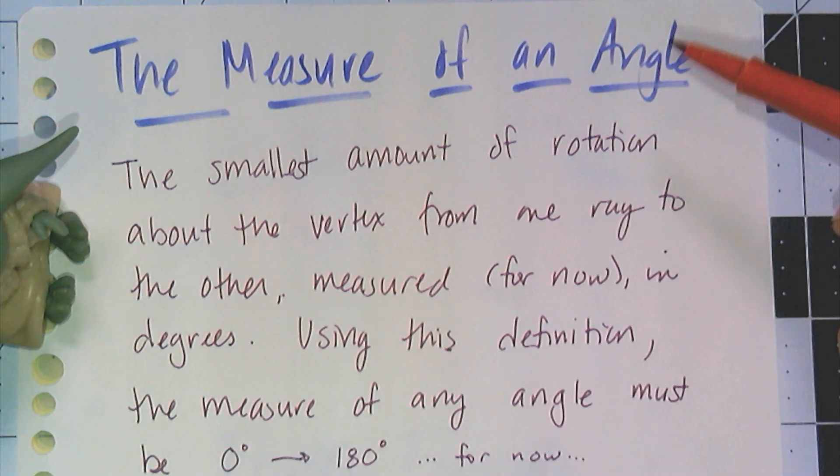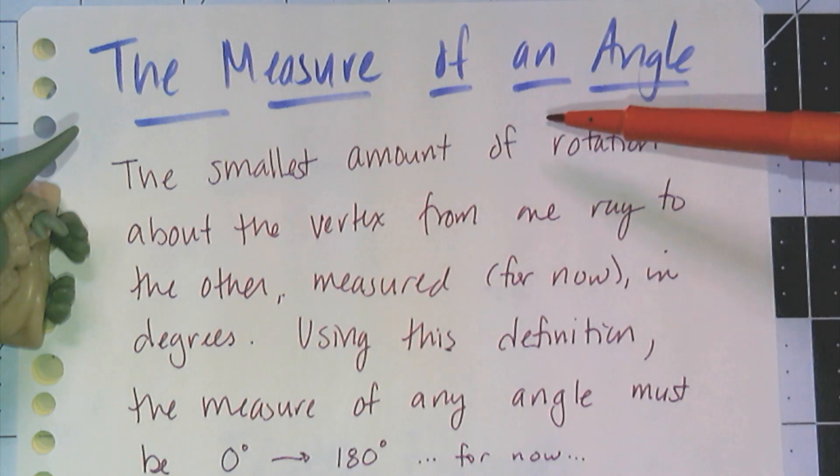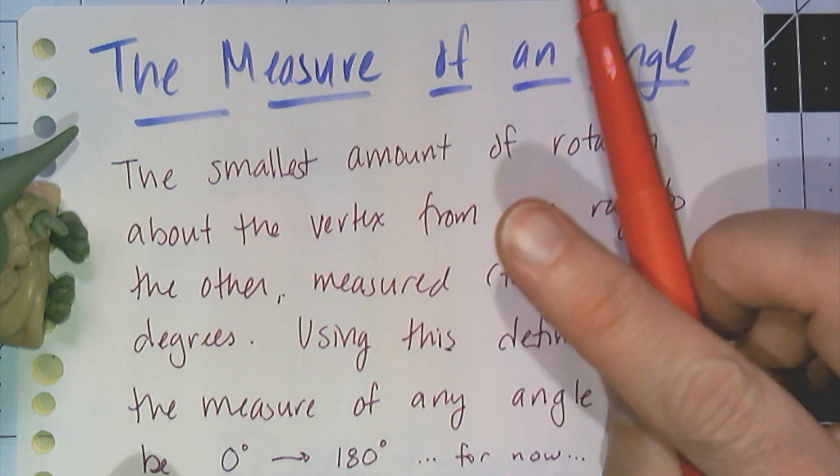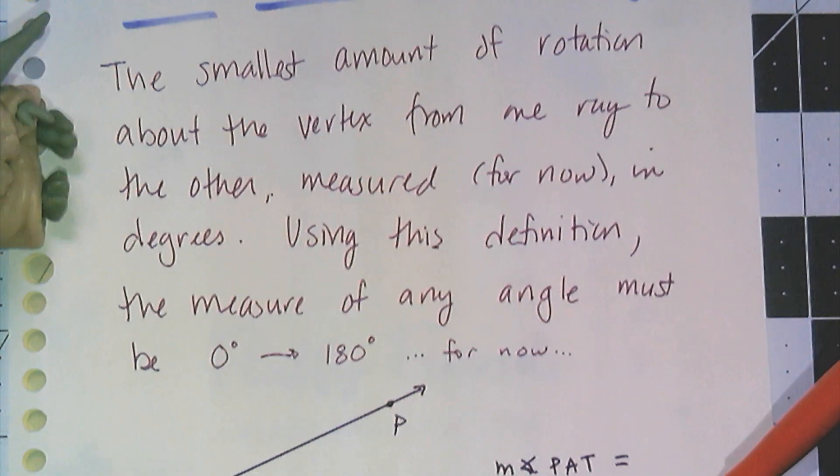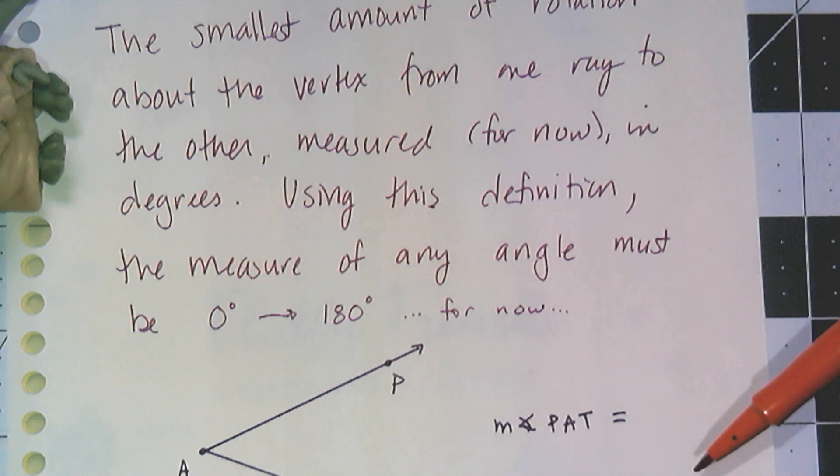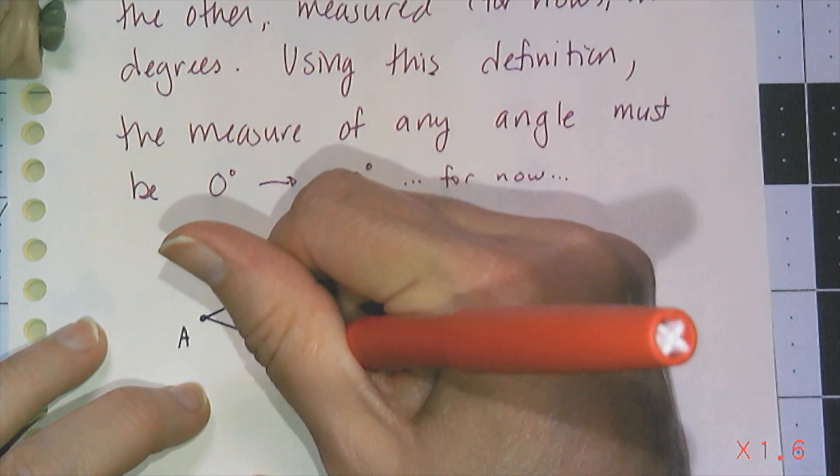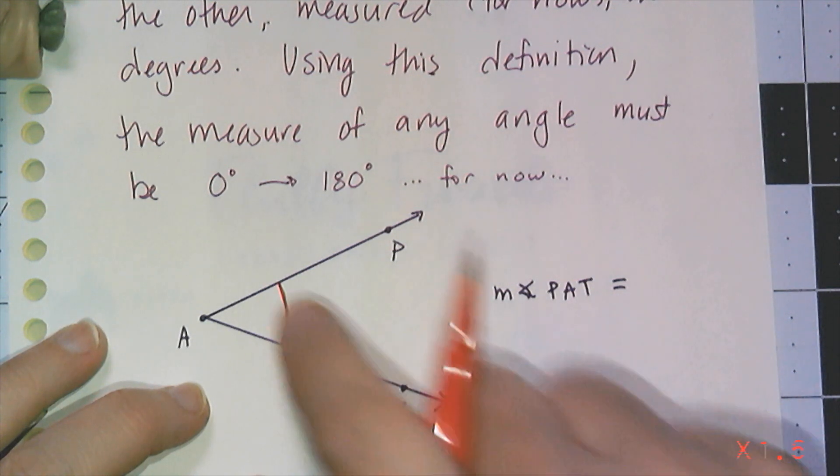Now talking about angles, we have to talk about the measure of an angle. And the measure of an angle is the smallest amount of rotation about the vertex from one ray to the other, or one side to the other, measured for now in degrees. And using this definition, our angles are going to be between 0 degrees and 180 degrees inclusive. So I can be a 0 degree angle and 180 degree angle. And so what I'm talking about is the measure is going to be this portion here in geometry.